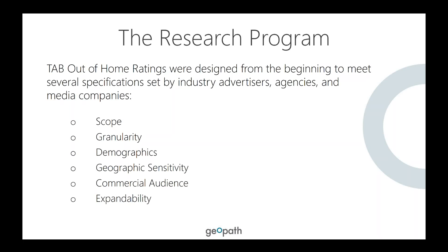The ones not yet mentioned are demographics and commercial audience — these were brand new. All of these requirements were new in their own ways, but the standardization of scope, granularity, and geographic sensitivity existed in some form even with plain circulation measurement. The way we measure circulation — what we used to call DEC — is the same in Seattle as it is in Miami.